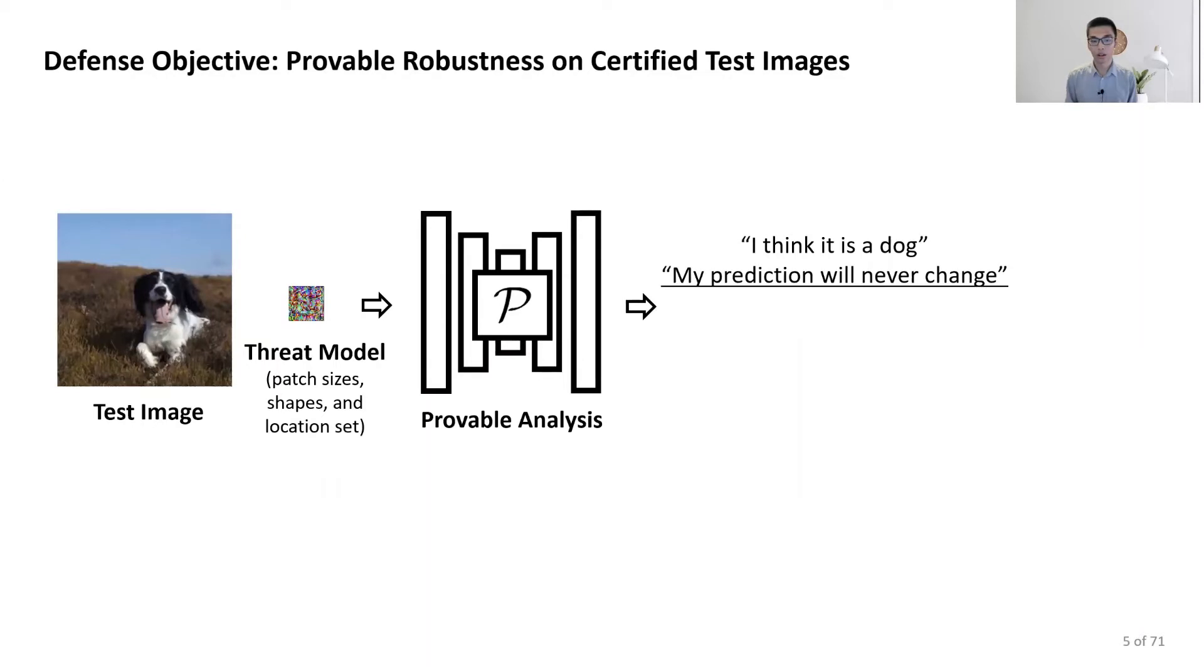In this case, if the prediction label matches the ground truth, we can argue that our model prediction is always correct no matter what an attacker does, and we can certify this image. Of course, there are some cases we cannot say anything for sure.